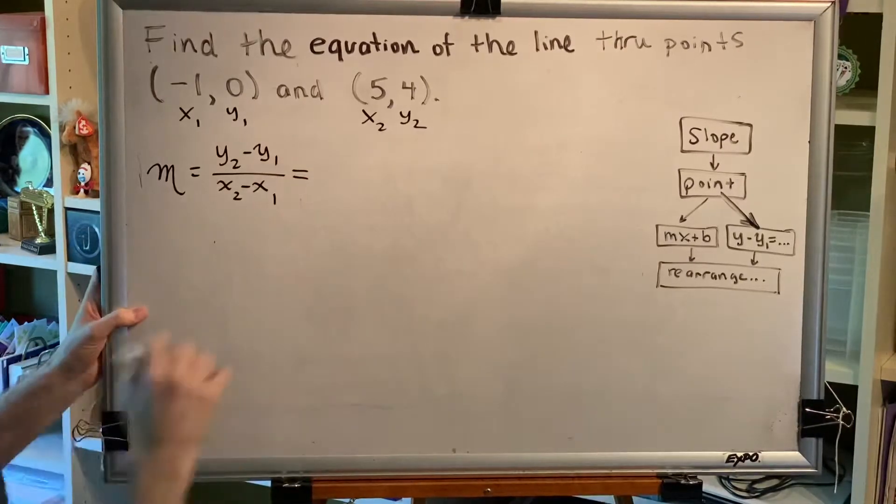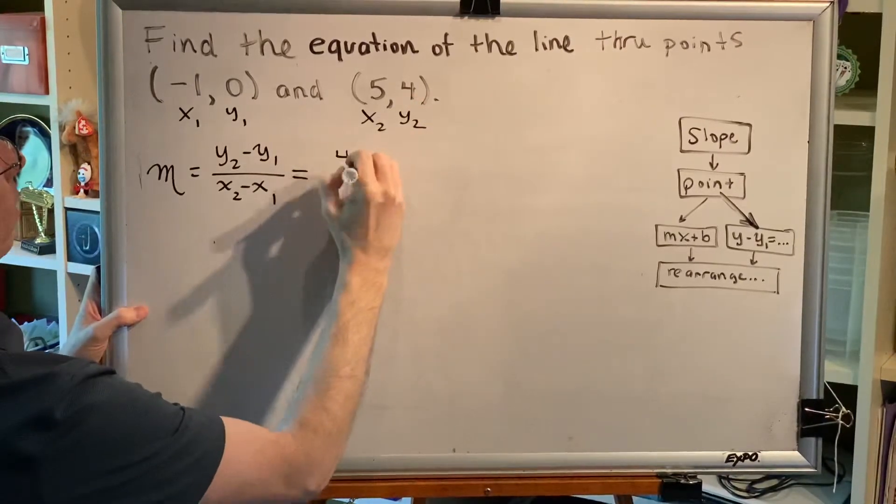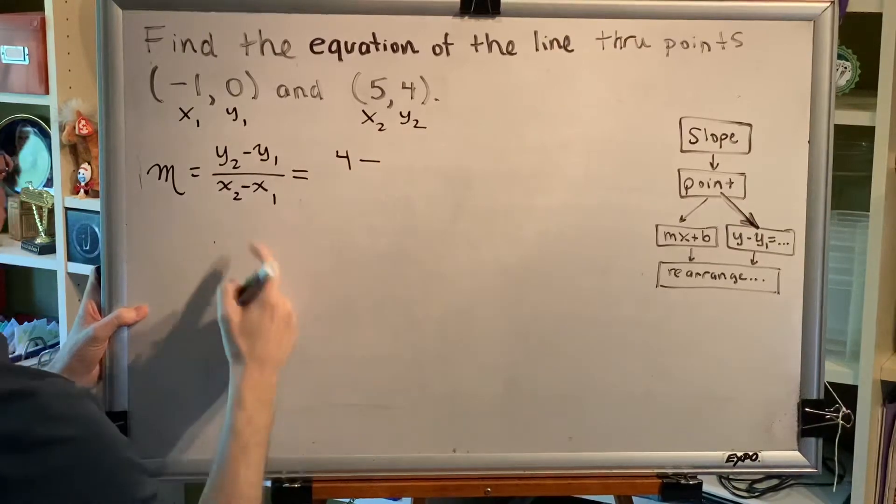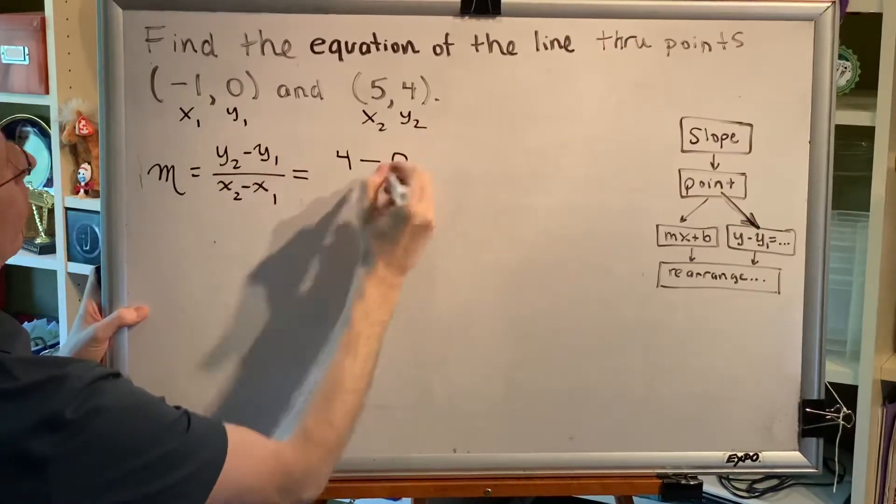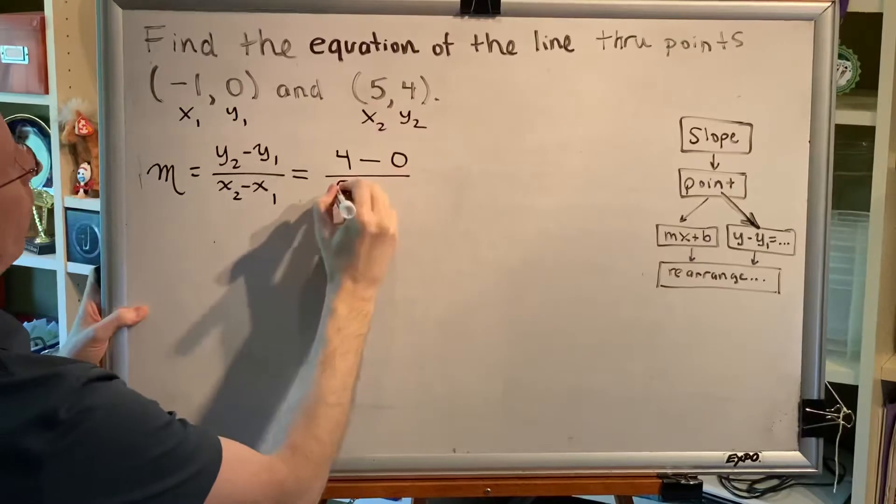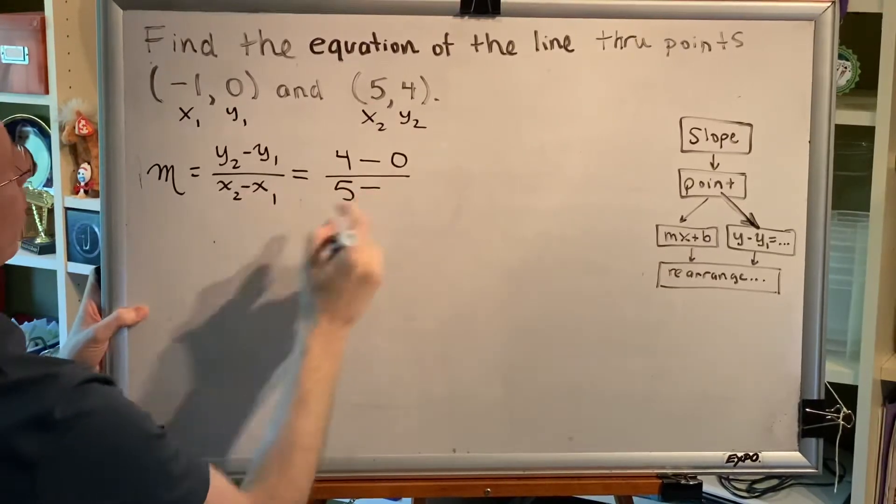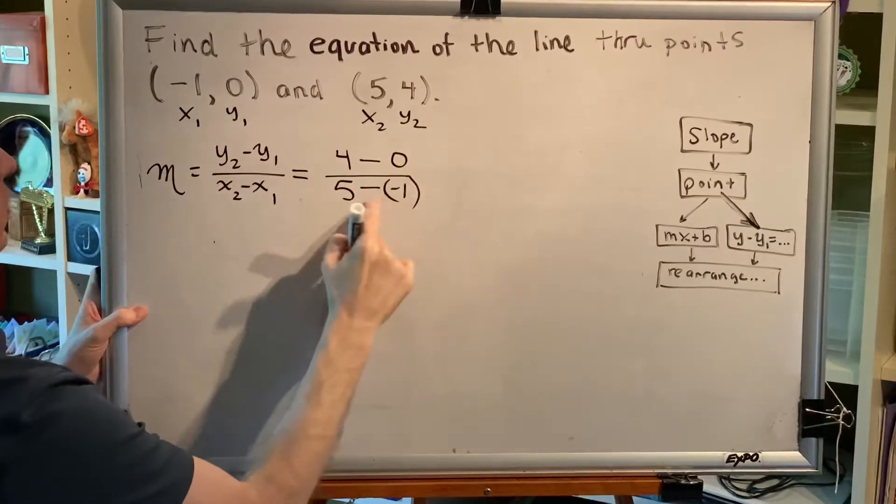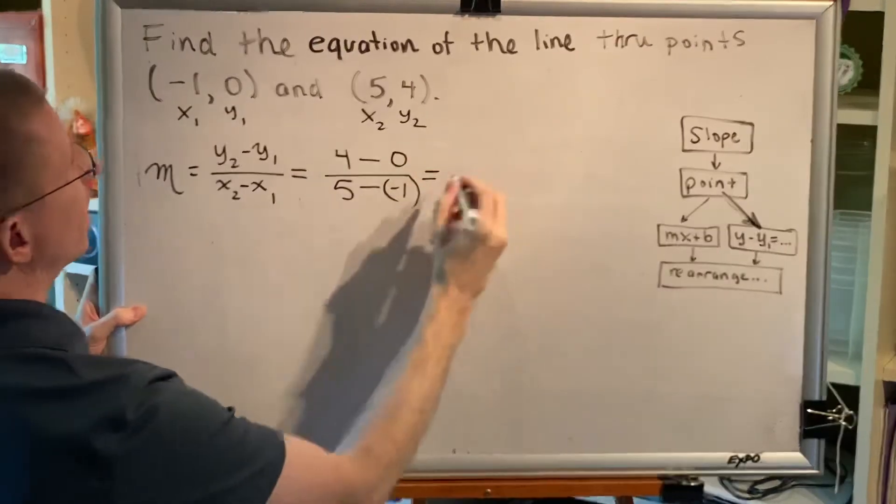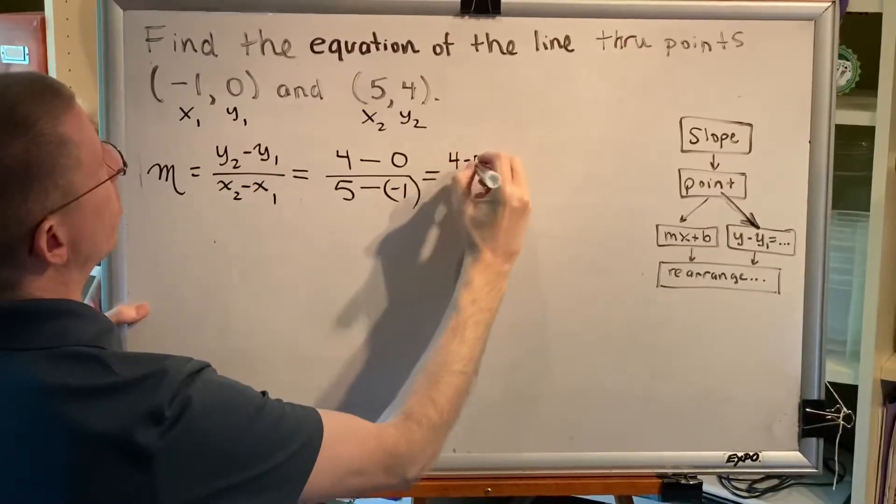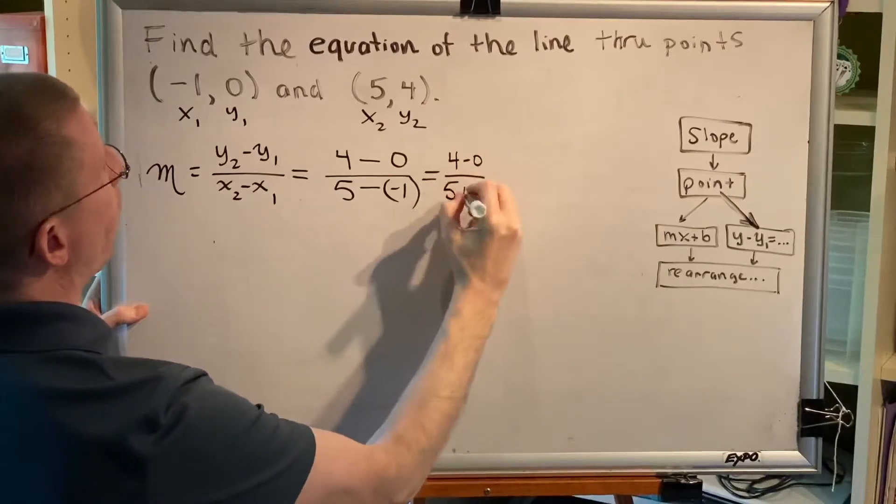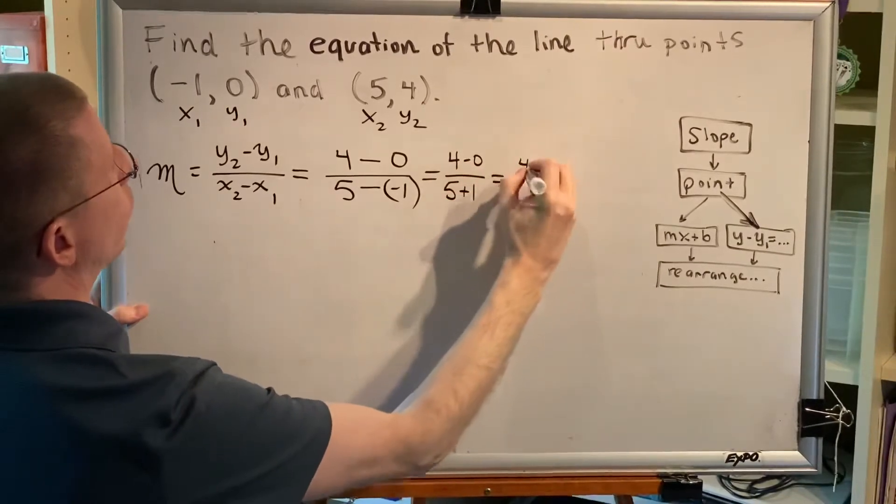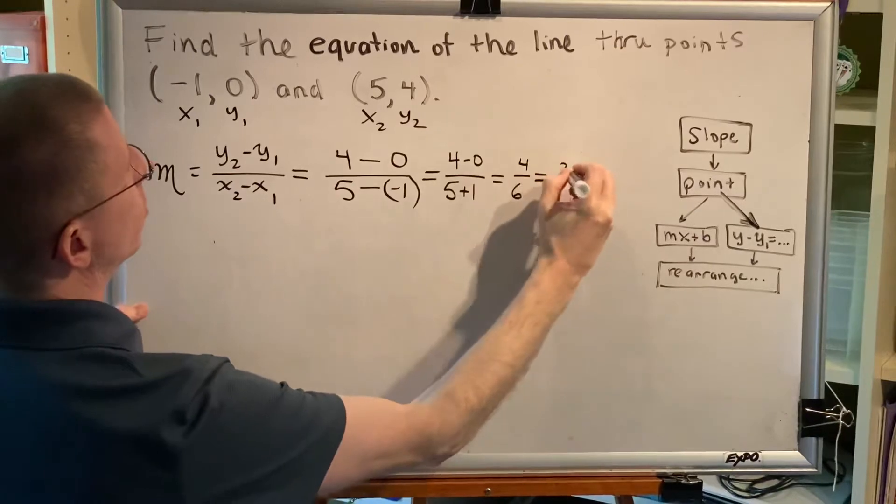Let's plug in. y₂ is 4 minus y₁ which is 0, fraction bar, x₂ is 5 minus x₁ which is -1. Notice we have two hyphens back to back and subtracting a negative is adding. So this is 4 - 0 over 5 + 1 which is 4/6 which reduces to 2/3.